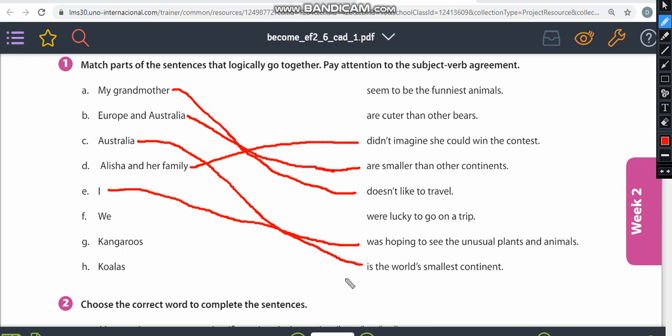Right now, letter F. We, let me see. We are cuter than the other bears. We seem to be the finished animals. The animals can talk, can speak, so we can use this answer. So we were lucky to go on a trip.